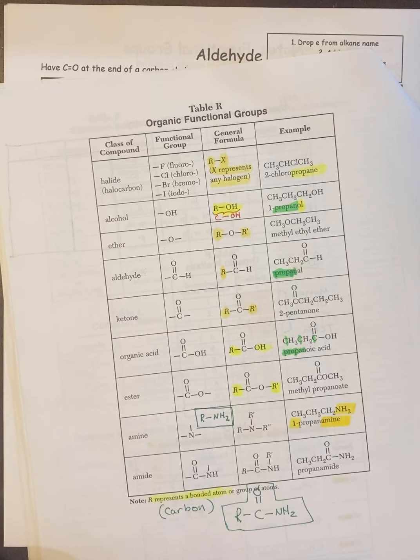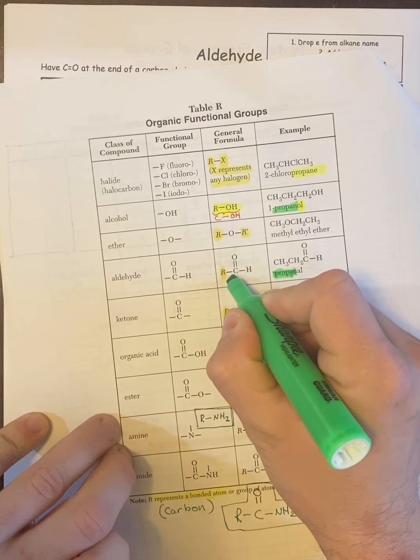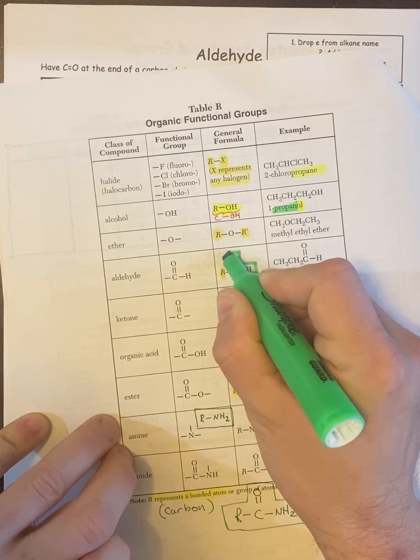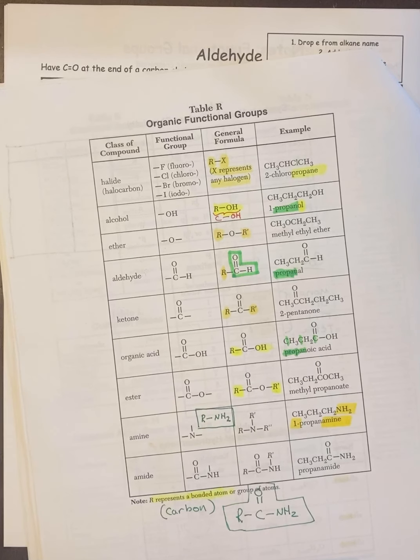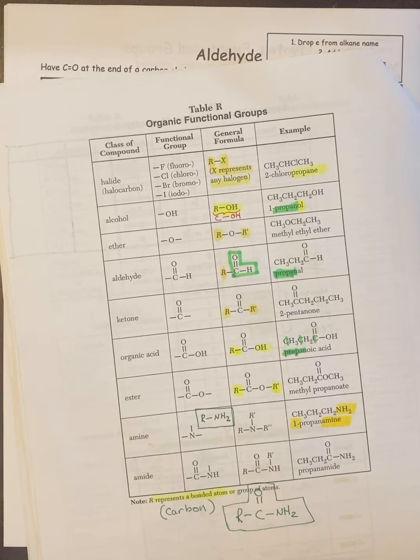But if we look at the functional group for an aldehyde, take a look. The functional group for an aldehyde is this entire thing right here. So since it has a carbon double bonded to an O and bonded to an H, it cannot go in the middle of a chain.